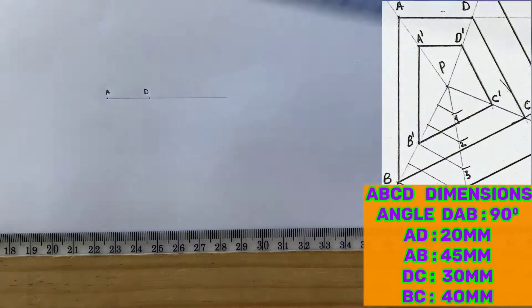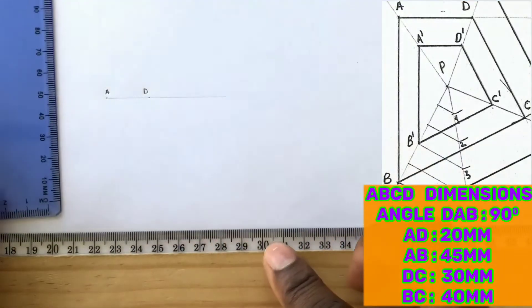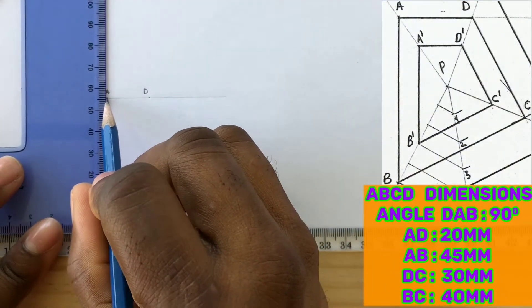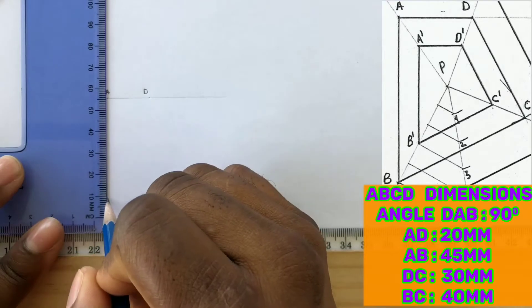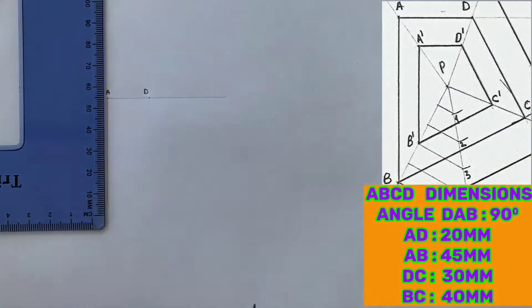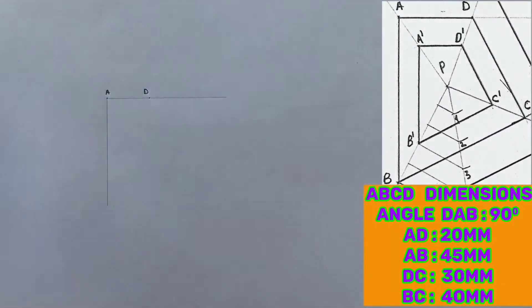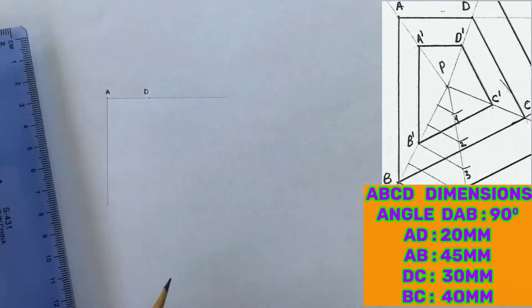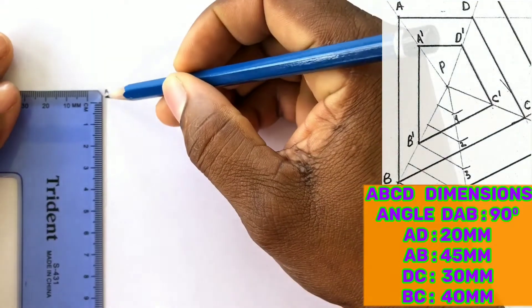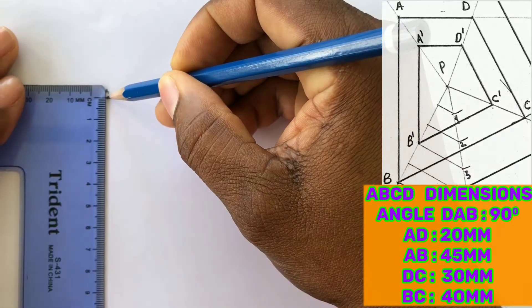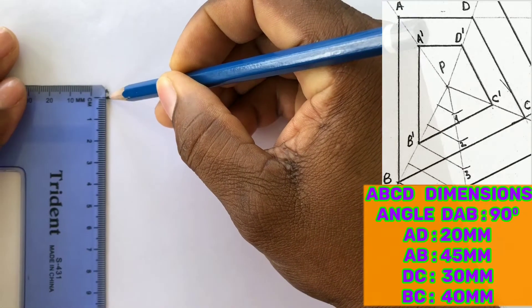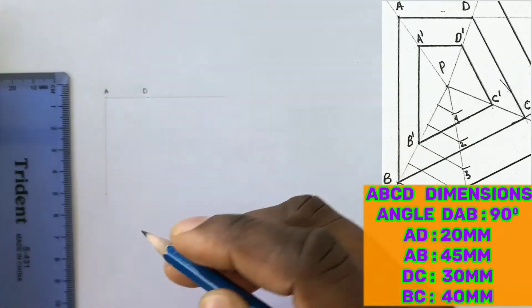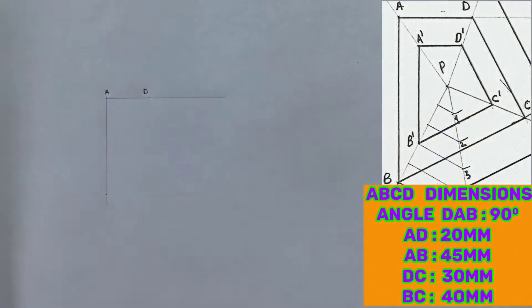With the use of your T-square and set square, you will now draw a perpendicular line from point A. Now measure 45 millimeters from point A. Identify this point and label it point B.